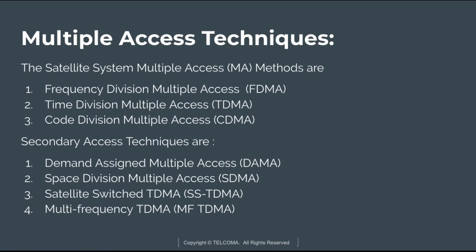The types of multiple access methods used in satellite communication are: first, FDMA — Frequency Division Multiple Access; second, TDMA — Time Division Multiple Access; and third, CDMA — Code Division Multiple Access.